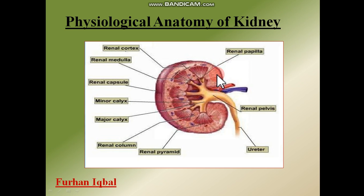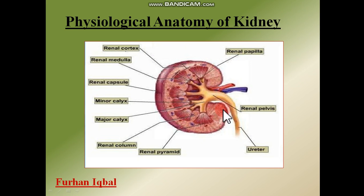The kidney has two regions when you bisect it from the center — this is the longitudinal view under study. The outer region of the kidney is known as the cortex and the inner region is known as the medulla. Both these regions are clearly distinct from each other, and when bisected there is a color differentiation between them. Here you can see that triangular or cone-shaped structures are present; these are known as the renal pyramids.